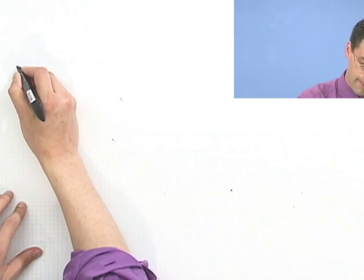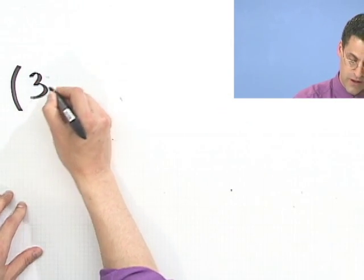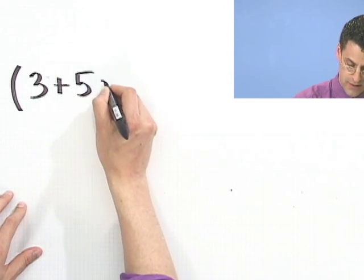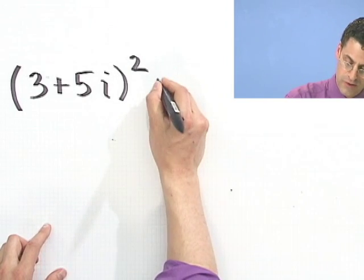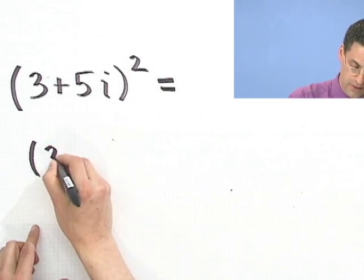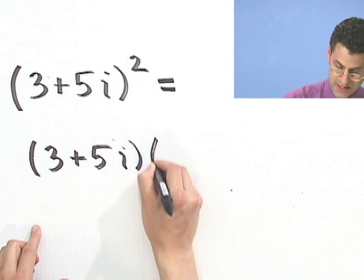Let's square out the number 3 plus 5i. It's sort of weird to be using foil with numbers. You always think of using foils when you have variables. But of course, really, this is a number, but it's a little bit complicated. It's a complicated number. It's an imaginary number. If I want to square this, that requires me to multiply it by itself. So I've got to foil 3 plus 5i with itself.